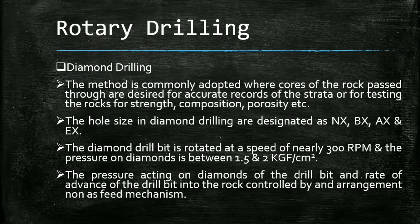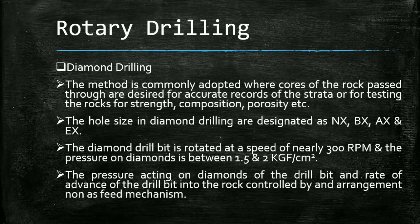The first subtype of rotary drilling is diamond drilling. This method is commonly adopted where cores of the rock are desired for accurate records of the strata, or for testing the rock for strength, composition, porosity, and so on. Hole sizes in diamond drilling are designated as NX, BX, AX, and X. The diamond drill bit is rotated at a speed of nearly 300 RPM and the pressure on the diamonds is between 1.5 to 2 kg-force per centimeter squared. The rate of advance of the drill bit into the rock is controlled by an arrangement known as the feed mechanism.